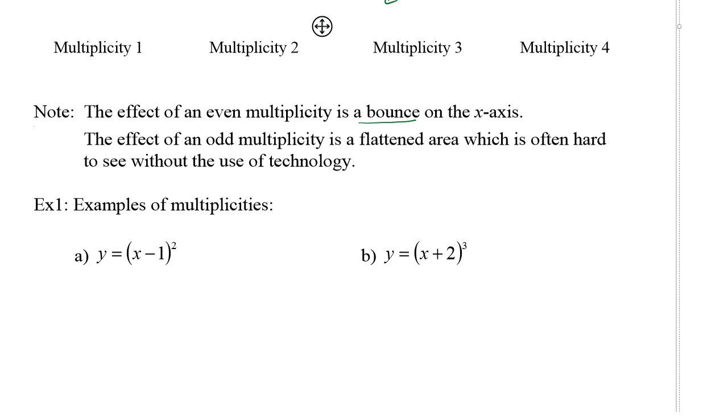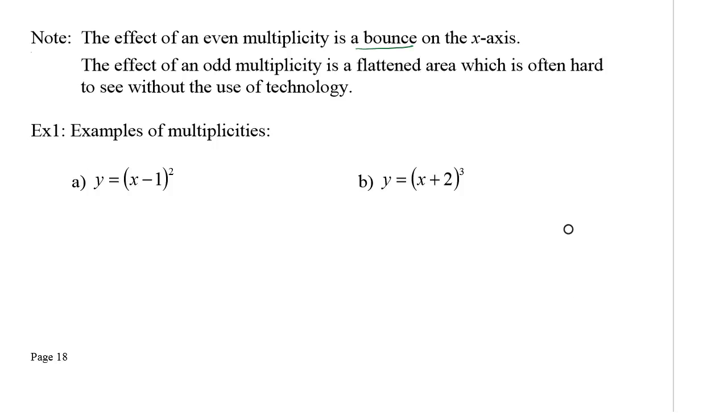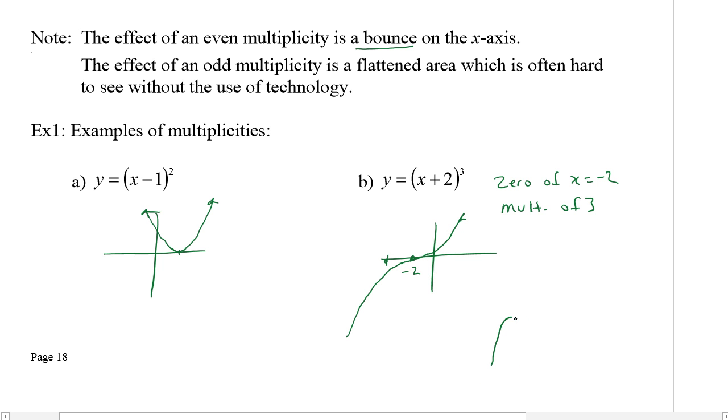So this is how I sketched in those four graphs. You'll notice this behavior - when it's odd, it crosses. When it's an even number, a multiplicity of 2 or 4 in our examples, it bounces off or touches but doesn't cross. Here's some examples of multiplicities. This is (x-1) squared.